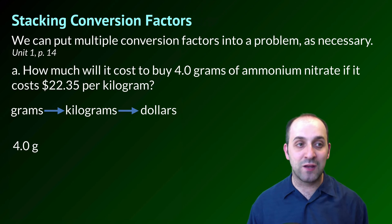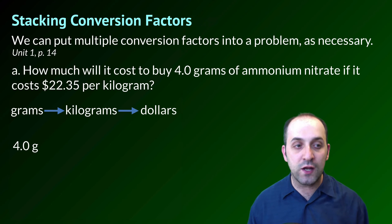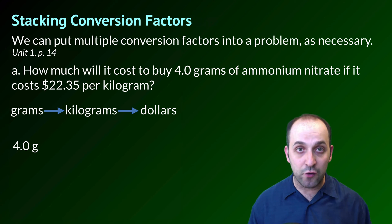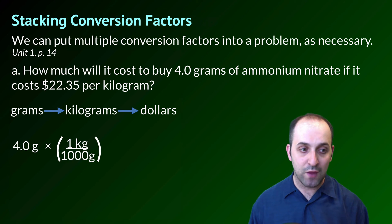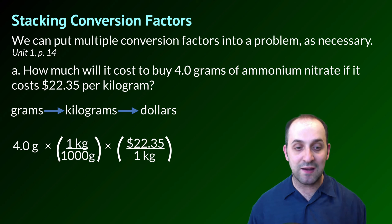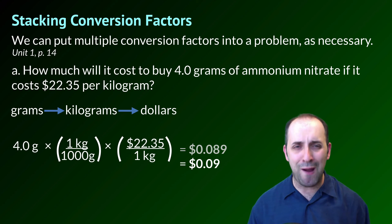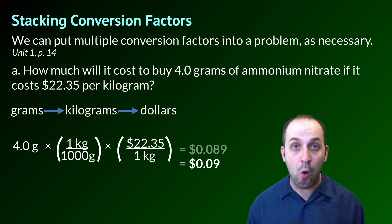Another great thing about conversion factors is that we can stack them together — multiple conversion factors in series as necessary. Here's an example from unit one, page 14: how much will it cost to buy 4 grams of ammonium nitrate if it costs $22.35 per kilogram? We go from 4.0 grams, convert to kilograms with the first conversion factor (grams on bottom, kilograms on top), then convert kilograms to dollars with the second (dollars on top, kilograms on bottom). Multiplying everything together gives $0.089, which rounds up to about 9 cents.